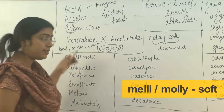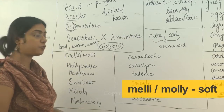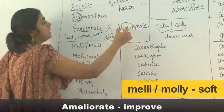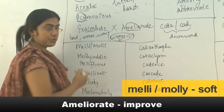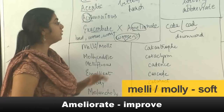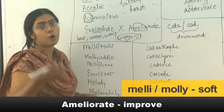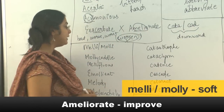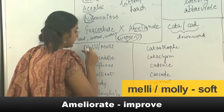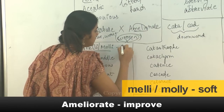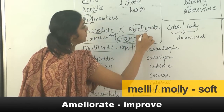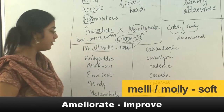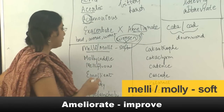The opposite of exacerbate is ameliorate, which means to improve a given situation. Amelioration is improving. From ameliorate — 'melly' or 'molly' is the root word for soft. So you soften the situation — that's ameliorate.